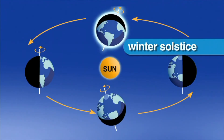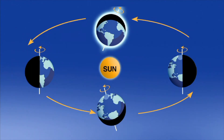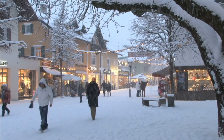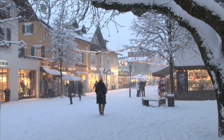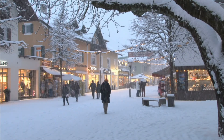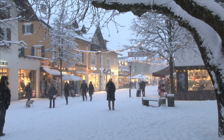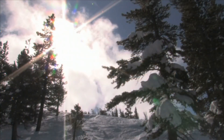The winter solstice, or the shortest day of the year, happens when the Earth's North Pole is tilted farthest away from the Sun. The winter solstice usually happens around December 21st. When it is tilted away from the Sun, it is winter in the Northern Hemisphere and we receive less light.